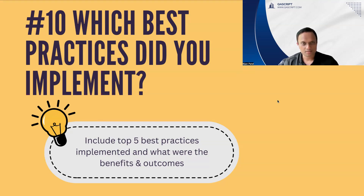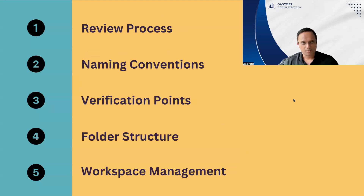You have to talk about which best practices you implemented and how they were effective. My suggestion would be to include the top five best practices which you implemented and which were beneficial for your project and your team. Also talk about all the outcomes of implementing these best practices in your Tosca project. You can include as many best practices as you want, but I would recommend a minimum of five. These are the best practices I will recommend, but you can also come up with your own best practices which you have implemented in your real-time project.